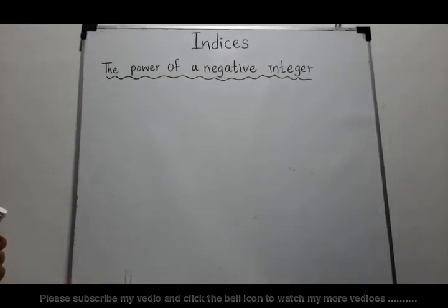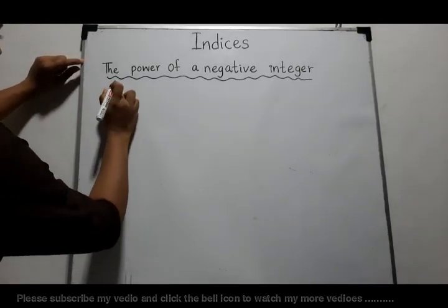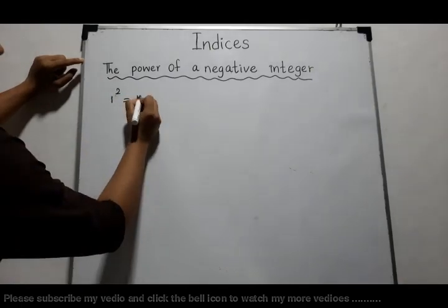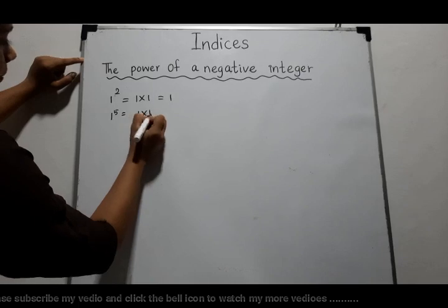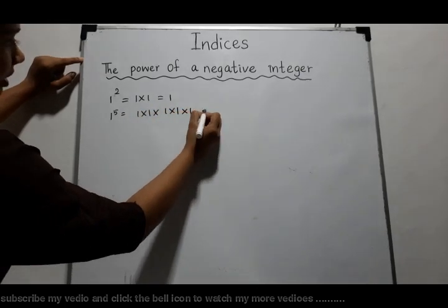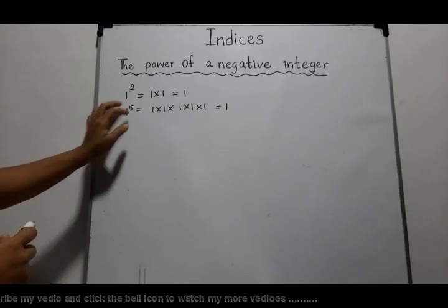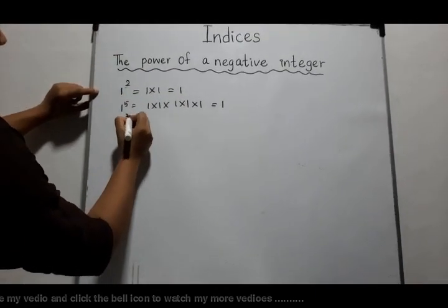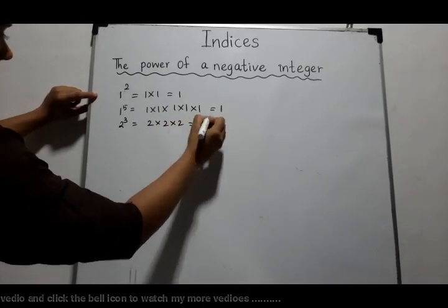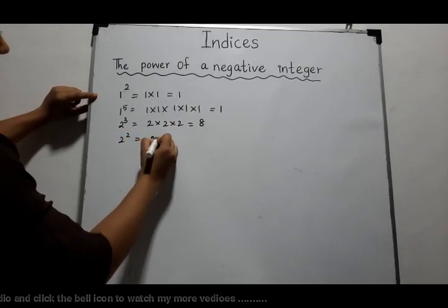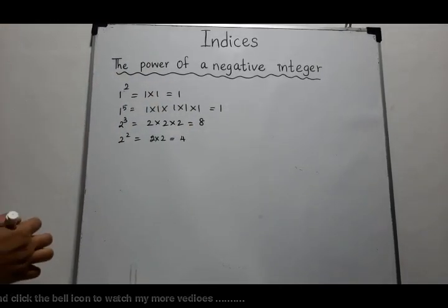Before continuing, let's see the power of a positive integer. 1 to the power 2 is 1 × 1 = 1. 1 to the power 5 is 1 × 1 × 1 × 1 × 1 = 1. Any power of 1 is always 1. Also, 2 to the power 3 is 2 × 2 × 2 = 8, and 2 to the power 2 is 2 × 2 = 4. You have learned this in grade 7.